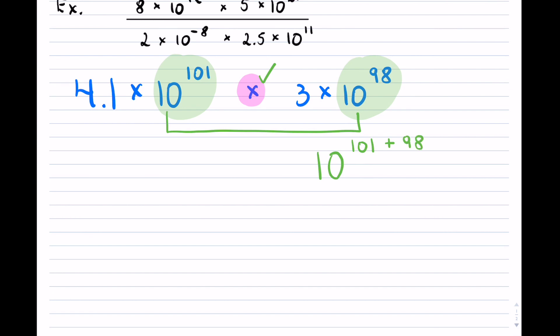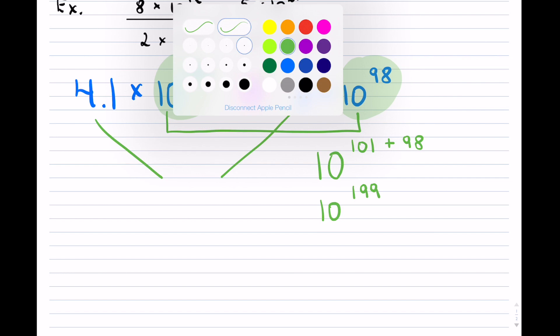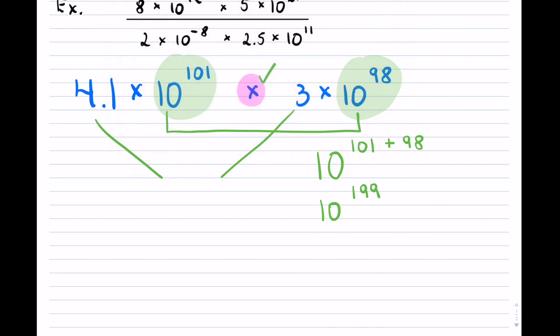And you can add that up and you will notice that this is 10^199. That's what you do with the base and the exponent when you are multiplying. Now what do you do with the mantissa, the leading number? Well, you multiply them.